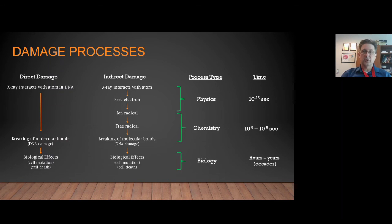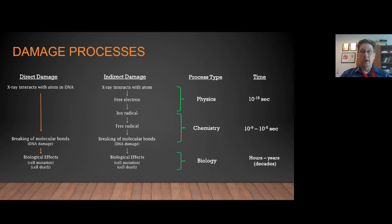Finally, after these chemical changes occur, the cell takes over, trying to repair itself and overcome the damage caused by the physical interactions and chemical changes. These biological changes occur within minutes and hours as the cell tries to repair itself, extending to days, months, and years over the cell cycle — and even out to decades when considering what hereditary effects may be caused by these interactions in the long term. These are all what we consider biology: the biological process occurring as a result of that initial physical interaction of the radiation.